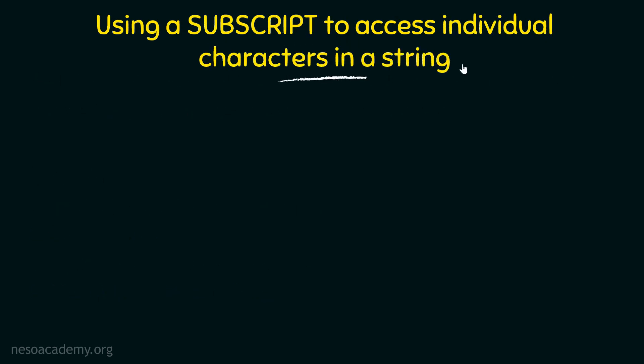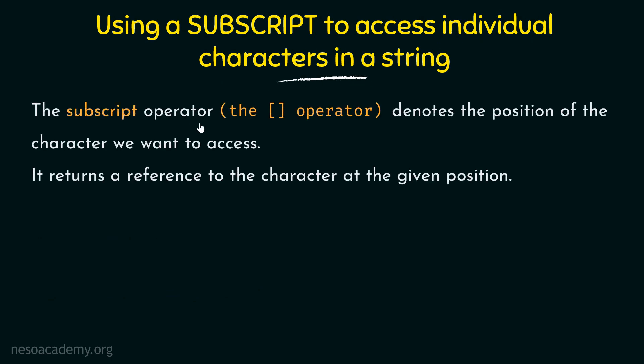To achieve this, we will use something known as a subscript, which is used to access individual characters in a string. The subscript operator denotes the position of the character that we want to access and returns a reference to the character at the given position. This is very important — if we are modifying it, then it is actually the value at the reference that gets modified, and because of that, it is going to modify the original string.